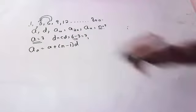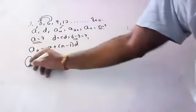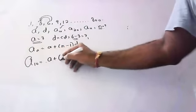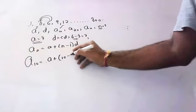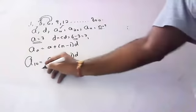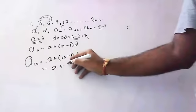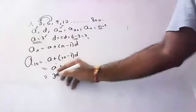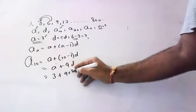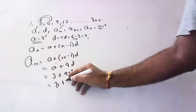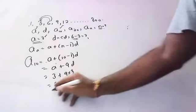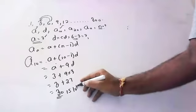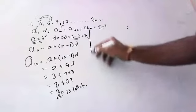Now if I want the 10th term: a + (10−1) × d, which is a + 9d. We know a is 3, so 3 + 9 × 3 = 3 + 27 = 30. So 30 is the 10th term.